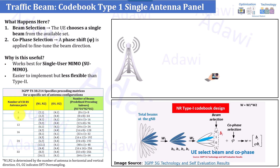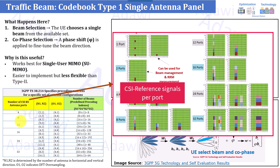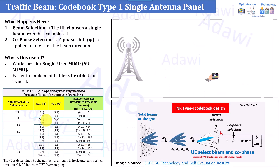From the configuration point of view, the first thing you need to do is select the number of CSI-RS antenna ports — that is, how many ports you want to use. As I explained in previous videos, each port gives more granularity. For example, if you configure 8 or 32 ports, this means 32 CSI-RS reference signals will be transmitted in the downlink direction from the gNB toward the user, and the user will measure all 32. This is the first input, but we still haven't defined the pre-coding matrix — Code Book Type 1.